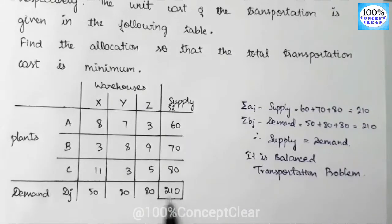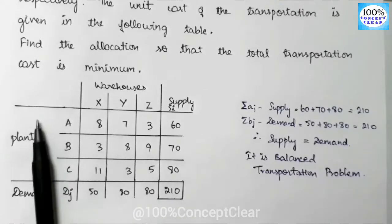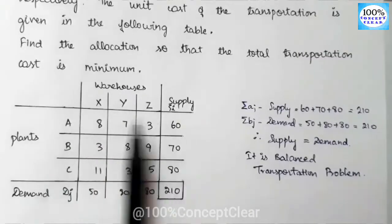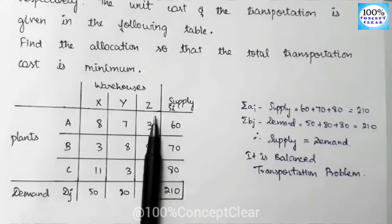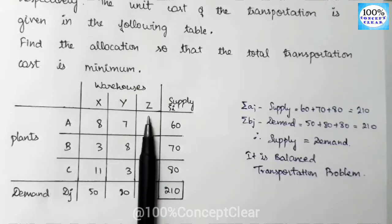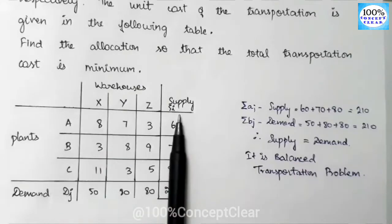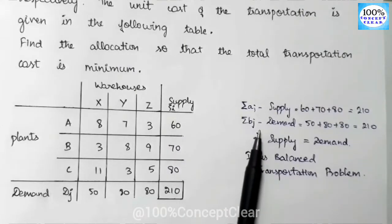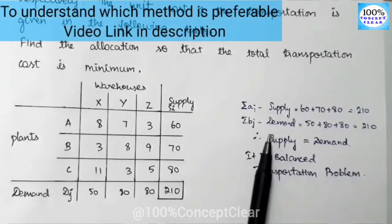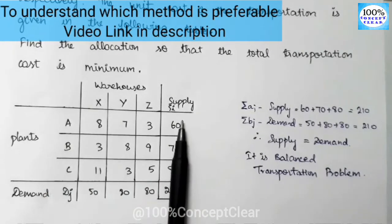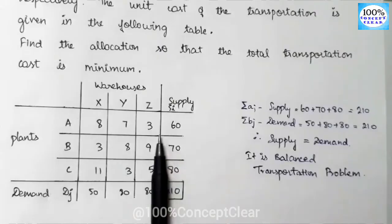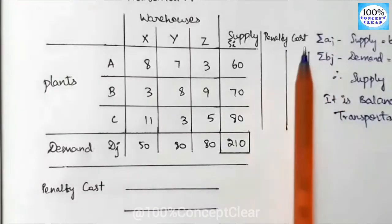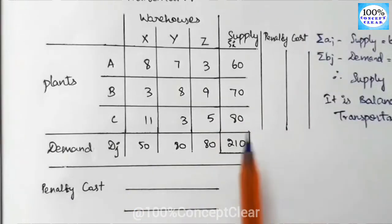The next step is to find the initial basic feasible solution. There are three methods available. We can use one of these methods. We will use the VAM method — Vogel's Approximation Method — to get closer to the optimum solution using row and column penalties.